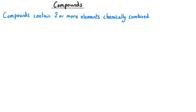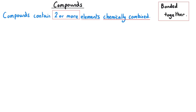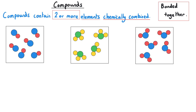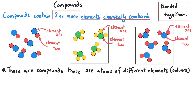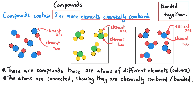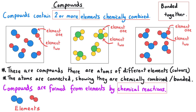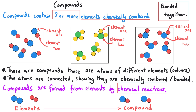Compounds are substances that contain two or more different elements that have been chemically combined — sometimes referred to as being bonded together. You can see from these diagrams that each compound has more than one different coloured atom shown. On the left we have the pure elements, and on the right we have the compounds they have been turned into after a chemical reaction.